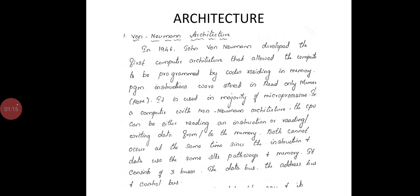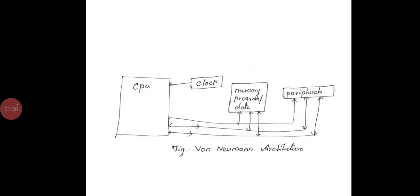It is used in majority of microprocessors. A computer with Von Neumann architecture, the CPU can be either reading an instruction or reading and writing data from to the memory. Both cannot occur at the same time since the instruction and data are using the same signal pathways on memory. It consists of three buses: the data bus, address bus and control bus.